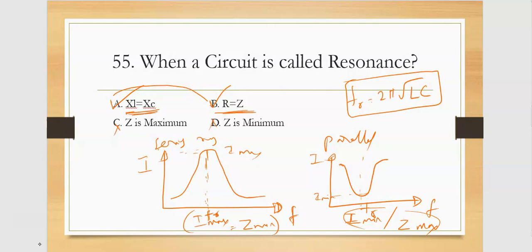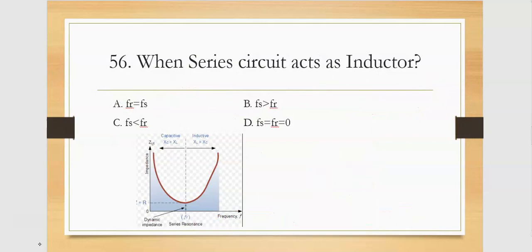The condition for resonance is when inductive reactance XL equals capacitive reactance XC. At this point, resistance R equals impedance Z. So both answers — R equals Z, and XL equals XC — are correct conditions for resonance.